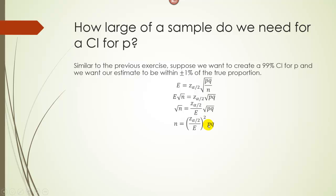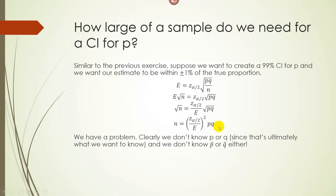So what you can do instead is you can just say P and Q are both one-half. This will give you the most conservative estimate for the minimum sample size.